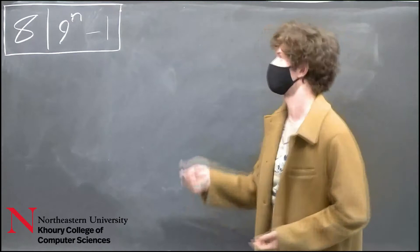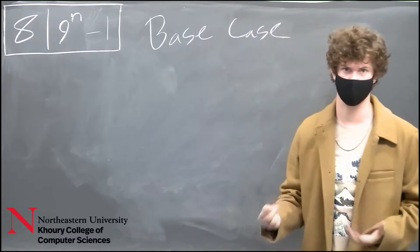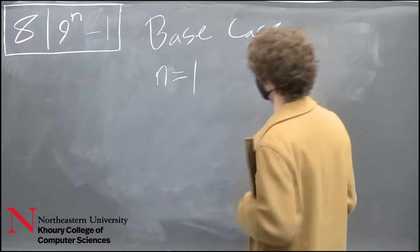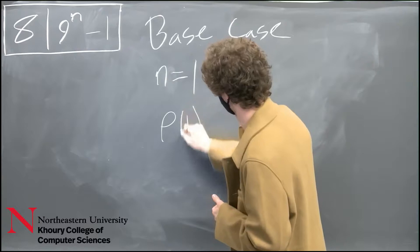We start off by testing our base case. Our base case for this example is going to be n equals 1. So for this example we have p of n, or p of 1 rather.